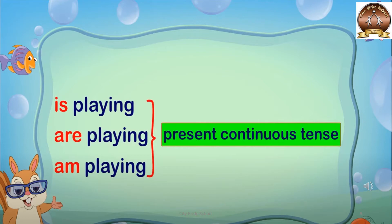The helping verb we use differs based on the noun or pronoun. If the noun or pronoun is singular, we use 'is'. If the noun or pronoun is plural, we use 'are'. And if it is 'I', we use 'am'. Always remember there are three simple steps in present continuous tense: first, we need a helping verb; second, we need a main verb; and we add ing to it. For example: is playing, are playing, am playing.